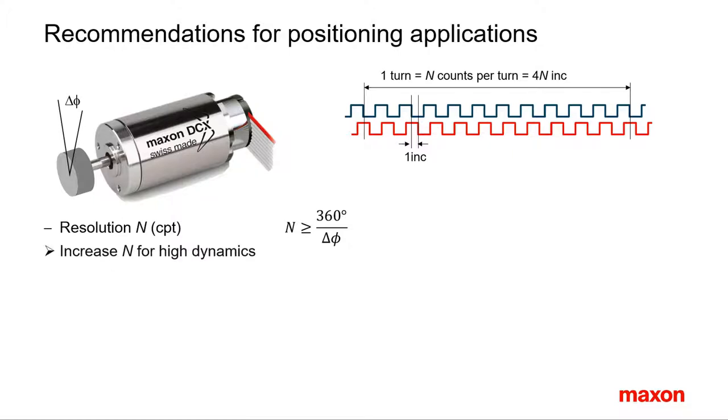For high dynamic applications with fast controllers and low permitted position overshoot, select a higher encoder resolution. However, be aware that with too high an encoder resolution, the signal frequency increases and the signal to noise ratio may be worse.